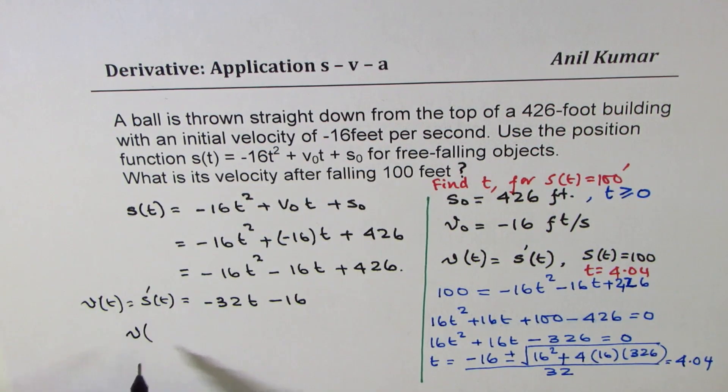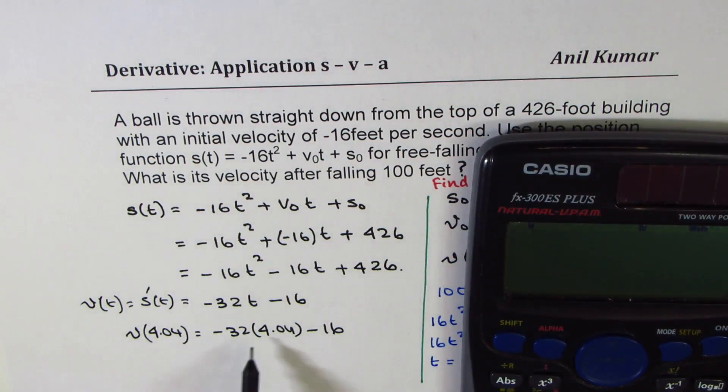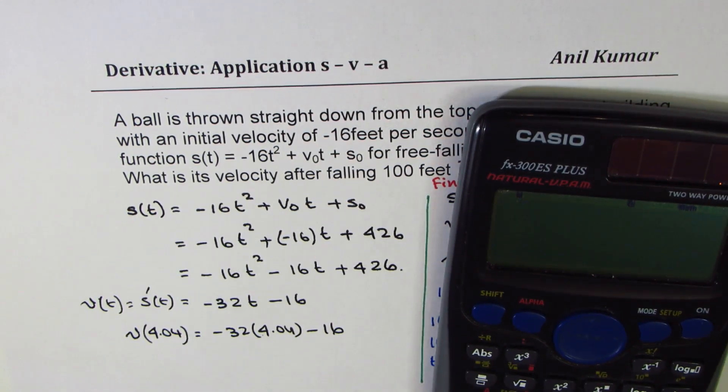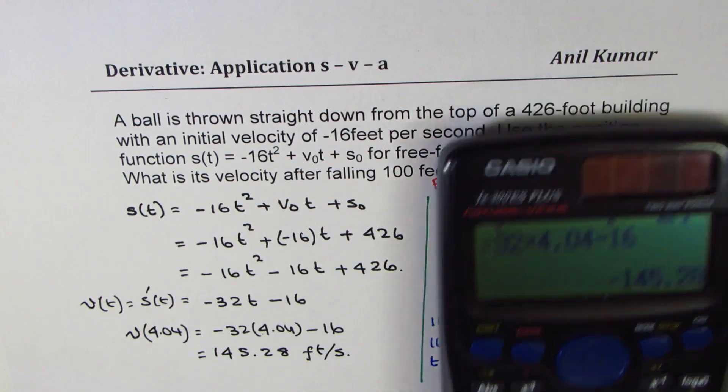So basically, we have to find velocity when t is 4.04. That is going to be -32 times 4.04 minus 16. So that gives you the answer. You would actually approximate using just the number 4. So it is negative since it is coming downwards. So we will do negative of 32 times 4.04 minus 16 equals to in decimals 145.28 feet per second. So that becomes your answer.